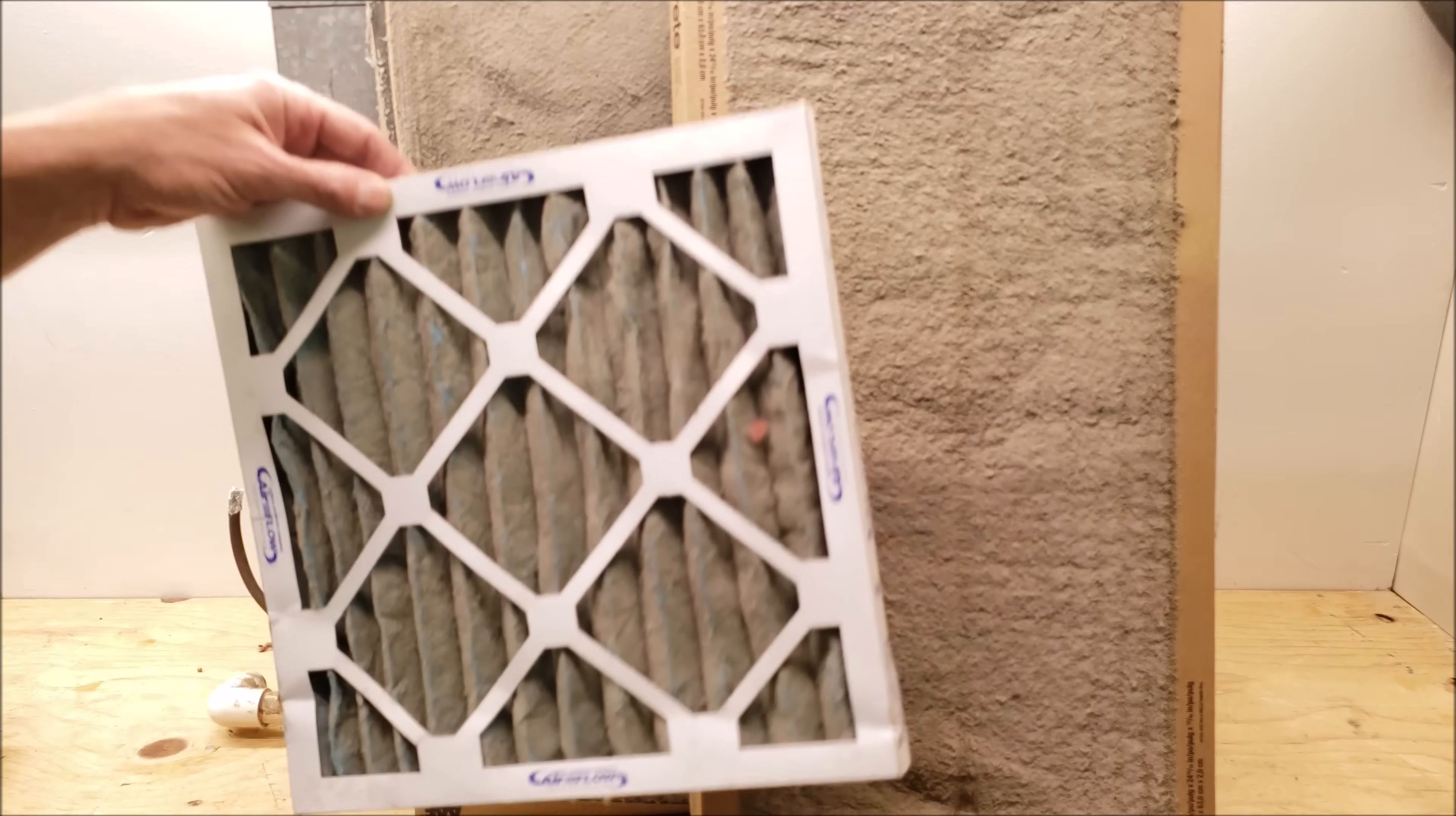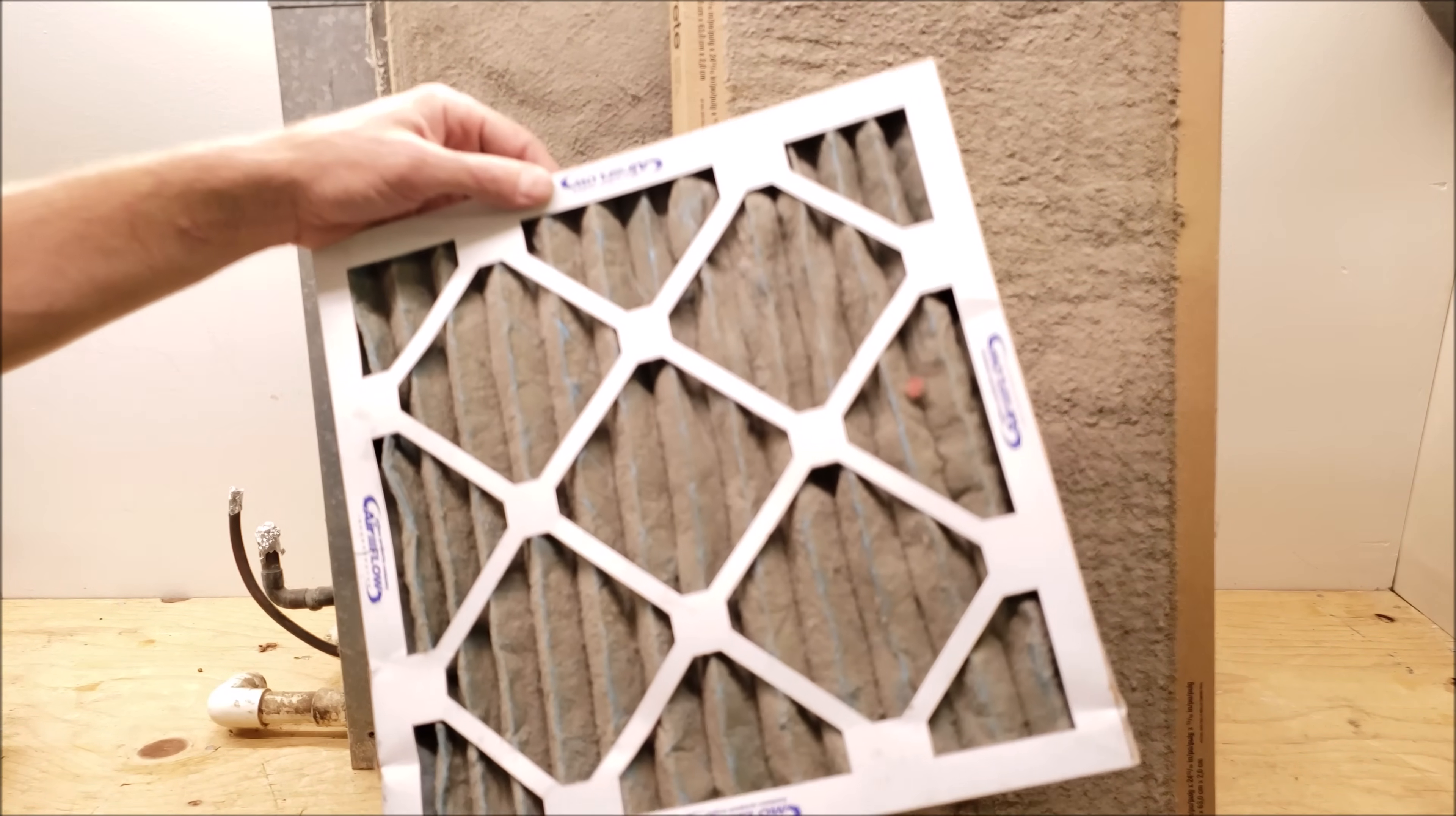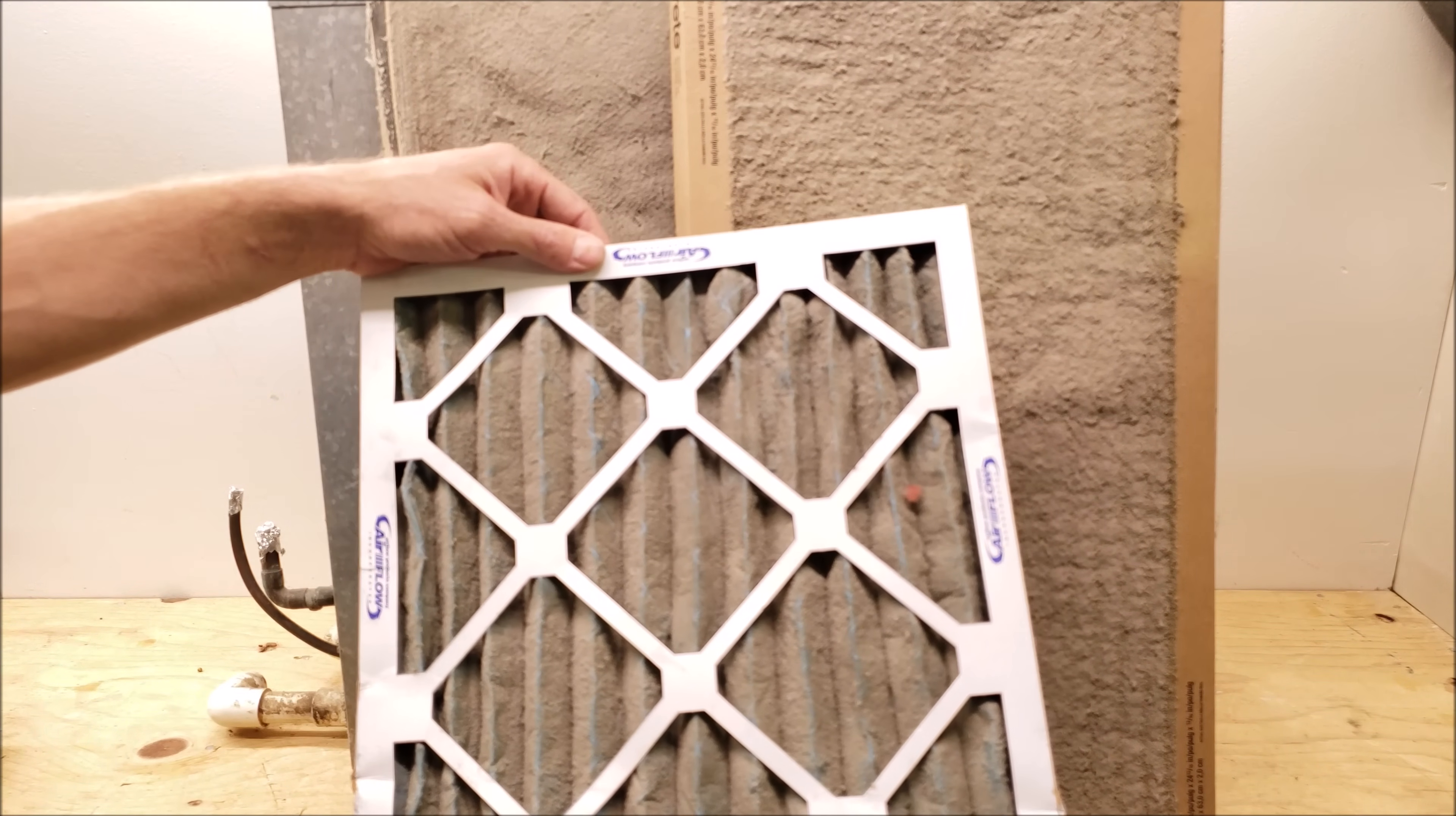This filter right here came out of a system that had a small return duct, so it was undersized to begin with, and then this filter clogged, and the indoor evaporator coil froze. When the coil freezes, you're wasting electricity, and you can potentially be hurting the outdoor compressor.